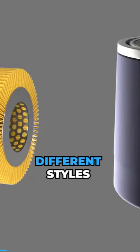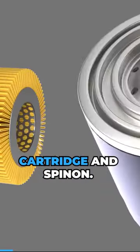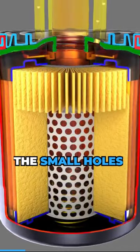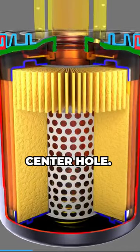Oil filters come in two different styles, cartridge and spin-on. With a spin-on type of oil filter, oil enters the small holes surrounding the main center hole.